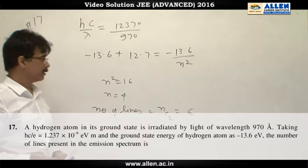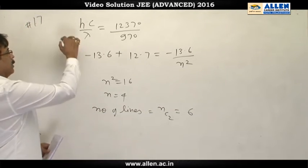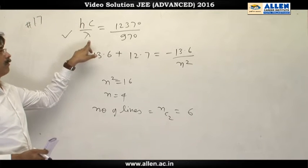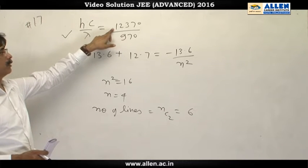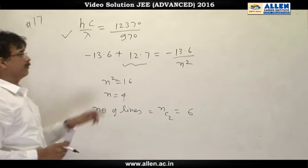Question number 17, the energy of the incident photon can be determined from the formula hc by lambda and from the given value of hc in the problem. From here we get the excitation energy of the photon.